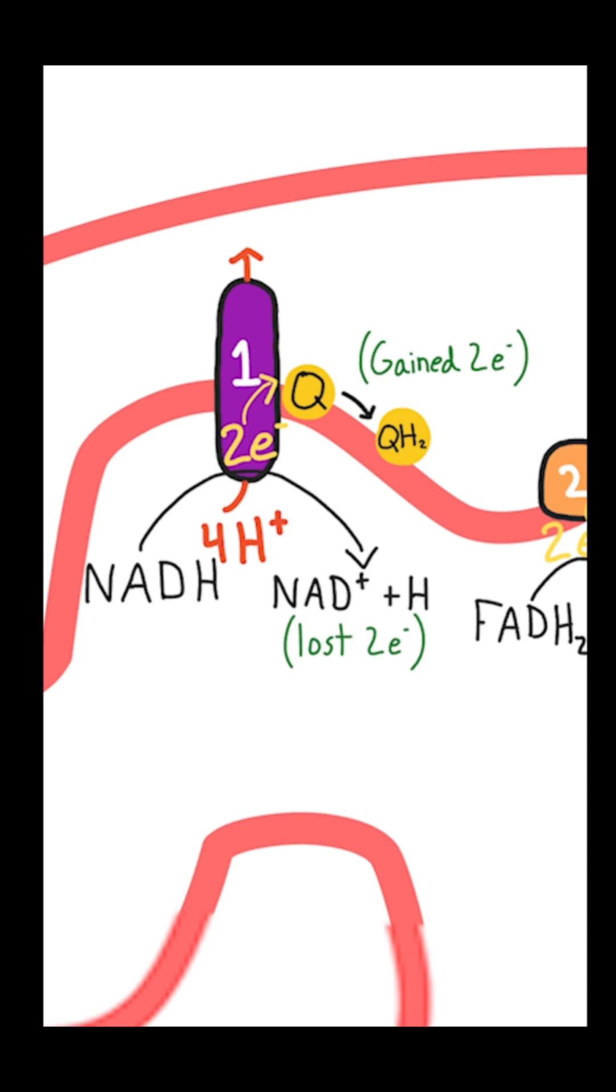Coenzyme Q will gain those electrons as shown here and become ubiquinol, which can also be written as QH2. When we transfer the electrons it gives off energy, and that energy is used to pump hydrogens from the matrix to the inner membrane space, and there are four protons pumped every time an NADH gives its electrons to Complex 1.